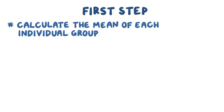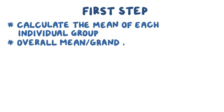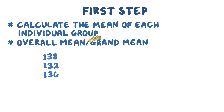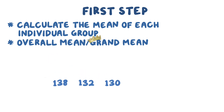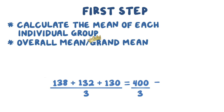There are six steps to test these hypotheses. The first step is to calculate the mean of each individual group and the overall mean, or grand mean, which is the mean systolic blood pressure for all groups. Since the means for each group are 138, 132, and 130, we add them together to get 400, then divide by the number of groups, which is 3. So the overall mean is 400 divided by 3, or approximately 133.